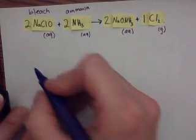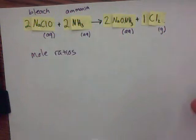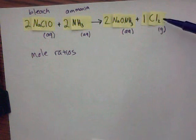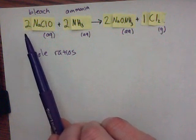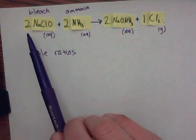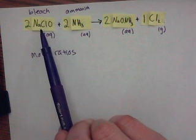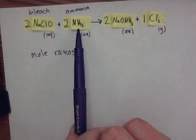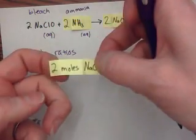To make mole ratios, you pull the information from the equation for the chemicals you need and interpret the coefficients as moles. In class, we talked about micro scale and macro scale interpretations. On the micro scale, this would be two formula units of sodium hypochlorite and two molecules of ammonia. But on the macro scale, we assume that two stands for moles.